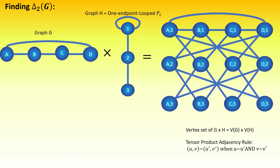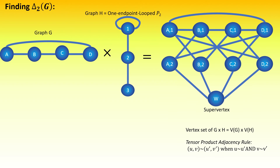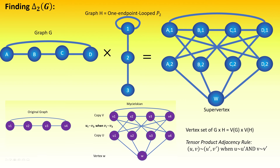This is the tensor product of g with the looped path graph of length 2. As the final step in the cone construction, collapse all of the vertices with right entry equal to the vertex at the non-loop end of h, vertex 3, into a single vertex w. This is the result, delta sub 2 of g — indeed the Michelskian of graph g that we found earlier.